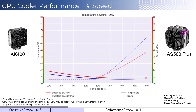With that in mind, we will first look at the fan's performance on an idle CPU, which is assumed to be using 30 watts of power. When comparing the AK400 cooler in red to the AS500 Plus cooler in blue, the AS500 Plus cooler has slightly better cooling across the board. Given that neither fan is expected to go above 50% during idle, sound is not a consideration.